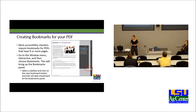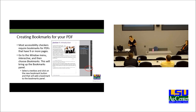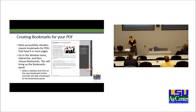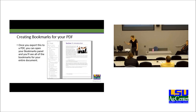Creating bookmarks for your PDF: bookmarks are a powerful tool that can aid in navigation for both sighted and non-sighted users. Most accessibility checkers require bookmarks for PDFs that have nine or more pages. To do this, go to the Windows menu, click Interactive, then choose Bookmarks. This brings up the Bookmarks panel. You can select a text box and click the New Bookmark button to add a bookmark to the panel. Once you export to PDF, you can open your bookmarks panel and see all the bookmarks for your entire document.